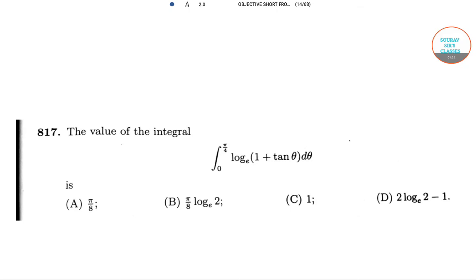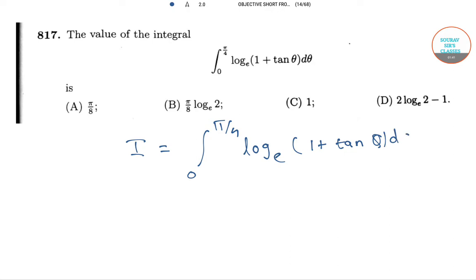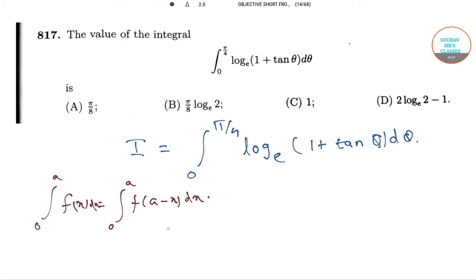In our next question, we will be solving this integration. Let us consider i is equal to integration from 0 to π/4 of log base e (1 + tan θ) dθ. Now using the property: integration of f(x) equals integration of f(a minus x) for the limit 0 to a.